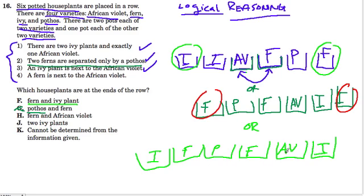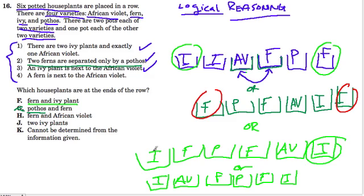And we could, again, rearrange these two plants over here. And we can have ivy, African violet, and then fern, pothos, fern, ivy.